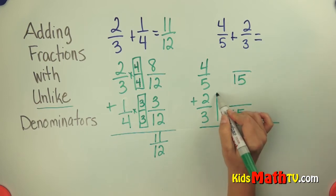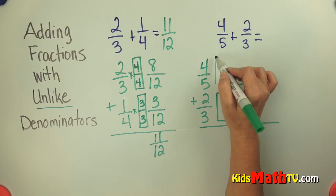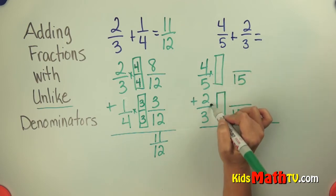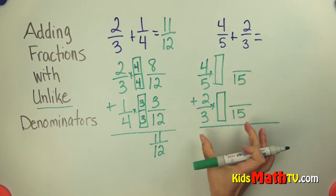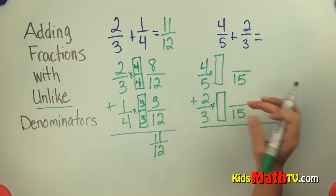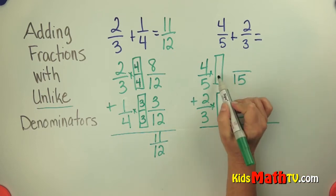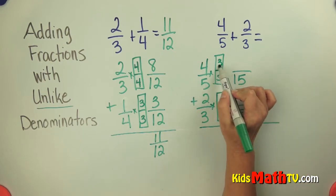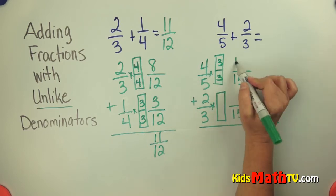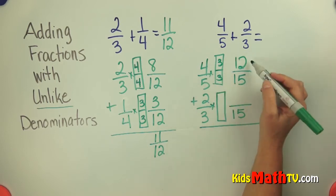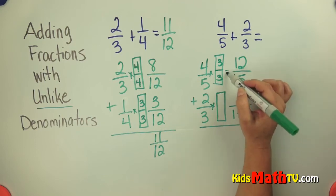So I'm going to multiply both of these fractions by 1. So that I get a new fraction but it's the same amount. Well, 5 times 3 is 15. So I have to multiply by 3 on the top. 4 times 3 is 12. So 4 fifths is the same as 12 fifteenths.